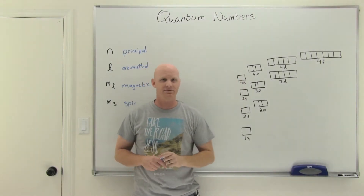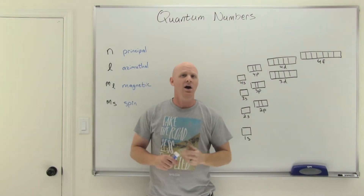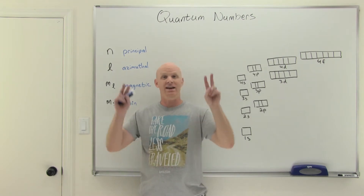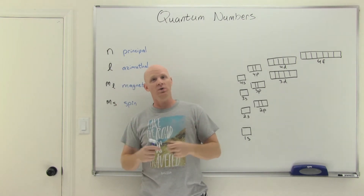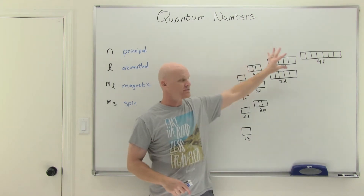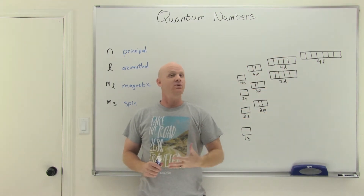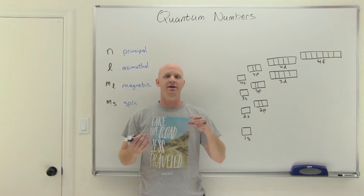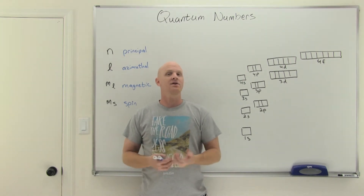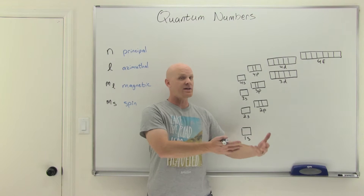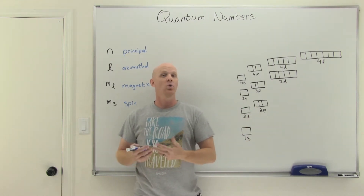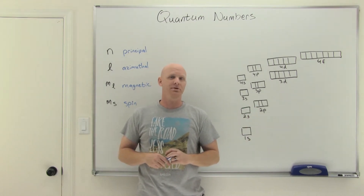Quantum numbers! That's going to be the topic of this lesson. We'll find out that every electron in an atom has an address or a code that tells you where in that atom it is, where in the mix of orbitals it is. It's a set of four quantum numbers, and we're going to define all four, talk about what they mean, and how you'd use them to identify where an electron is.